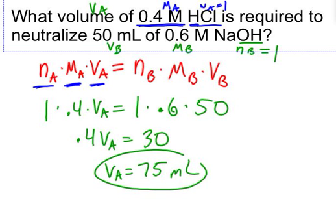So we need 75 milliliters of this acid to neutralize the base. This makes sense because 0.4 molar HCl is a weaker concentration than the 0.6 molar base, so you need more volume of acid to neutralize it. This quick comparison only works cleanly when both species have the same N values. That is how you calculate the endpoint of a titration.